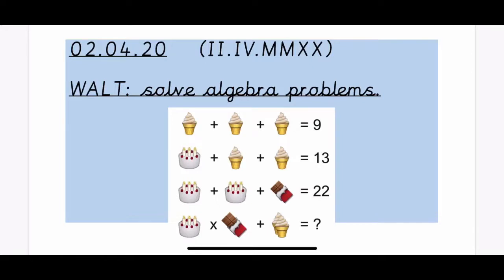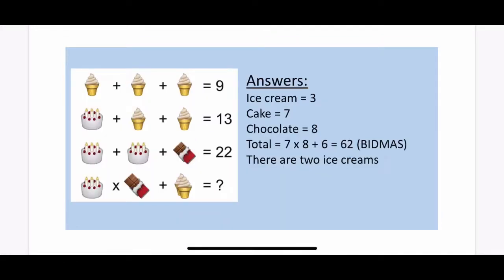Okay, let's go through the answers together then. So the ice creams are worth 3 each because 3 add 3 add 3 equals 9. That makes the cake worth 7 each because 7 add 3 add 3 is 13.